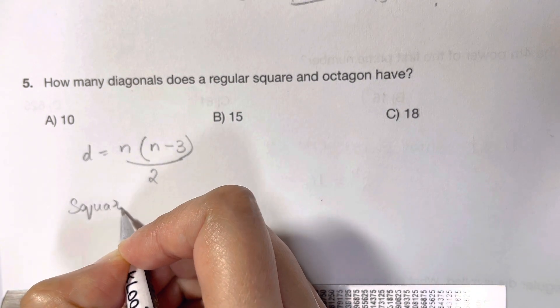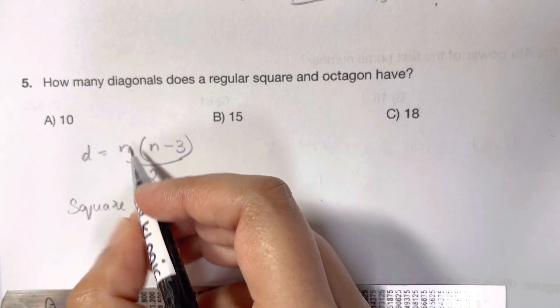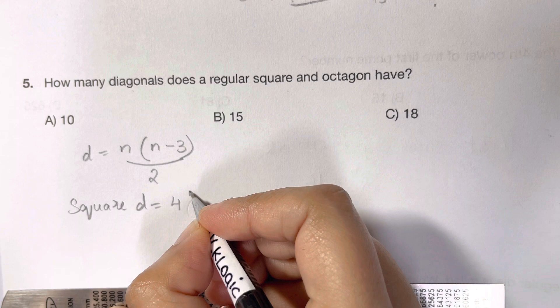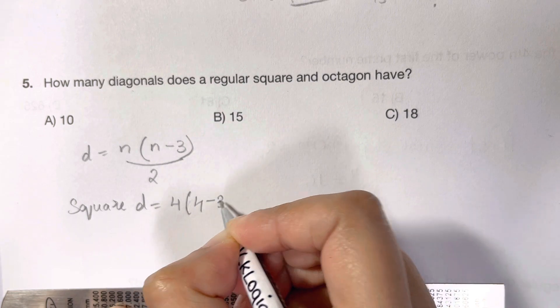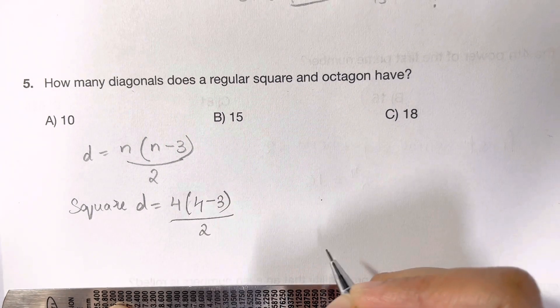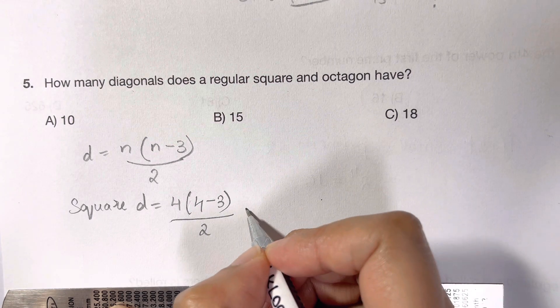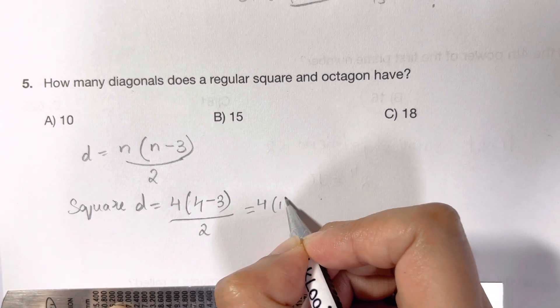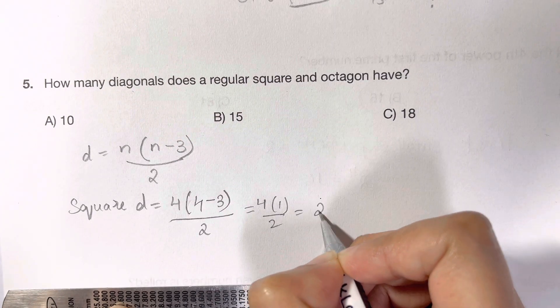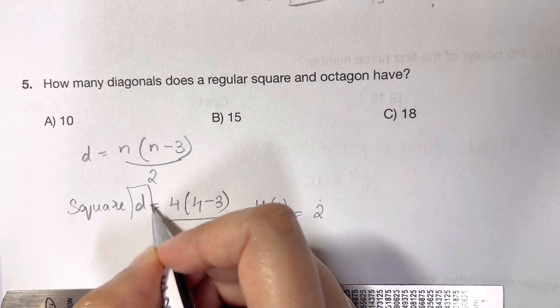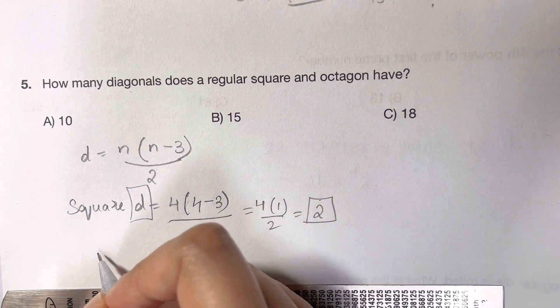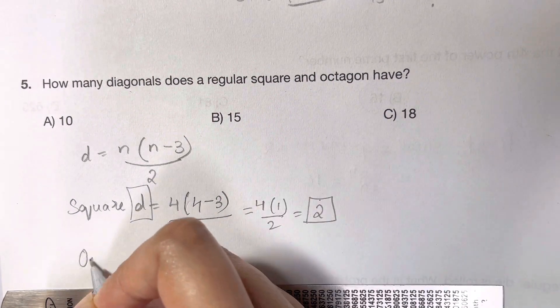Number of diagonals for square: square has how many sides? 4 sides. 4 times 4 minus 3 over 2. Let's calculate: 4 multiplied by 4 minus 3 is 1, over 2, that's equal to 2. So the number of diagonals a square has is 2.